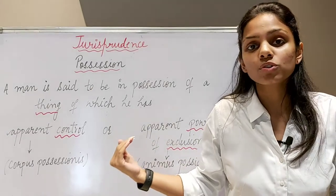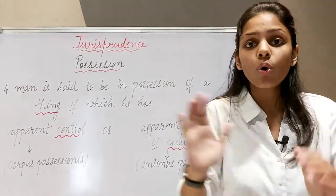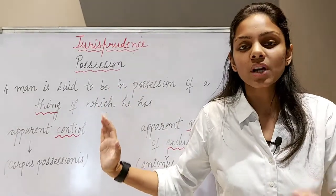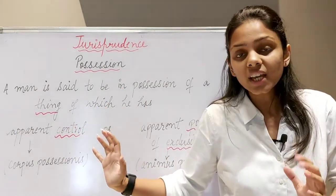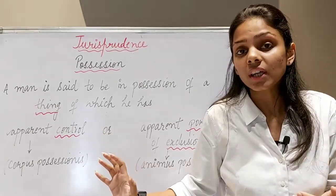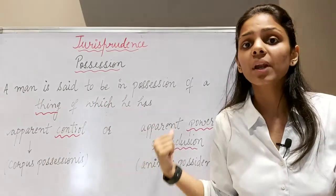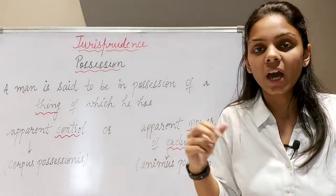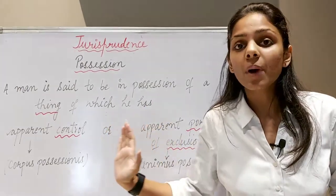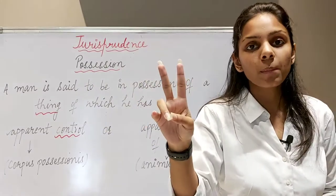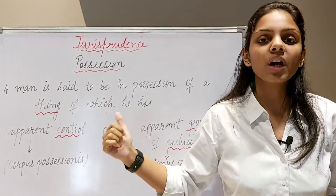Similarly, yahan pe if I talk about power of excluding others — iska matlab ki hai ki I have an intention, meri ek will ya meri ek volition hai that I have to hold this property exclusively to the exclusion of all others. I possess it, I hold it — I am reserving it as an exclusive, sole rightful owner of this property. Meri paas ek intent hai ki main baaki logon ko ye use nahi karne dungi ya phir ye enjoy karne nahi dungi — that forms my apparent power of exclusion. Toh iske under meri intent aata hai — animus. Aur uske under hamaare paas corpus rehta hai. Toh isko hum bolenge animus possidendi. Animus matlab mental intent hota hai, aapka intention. Aur corpus matlab physical contact hota hai, physical control hota hai.